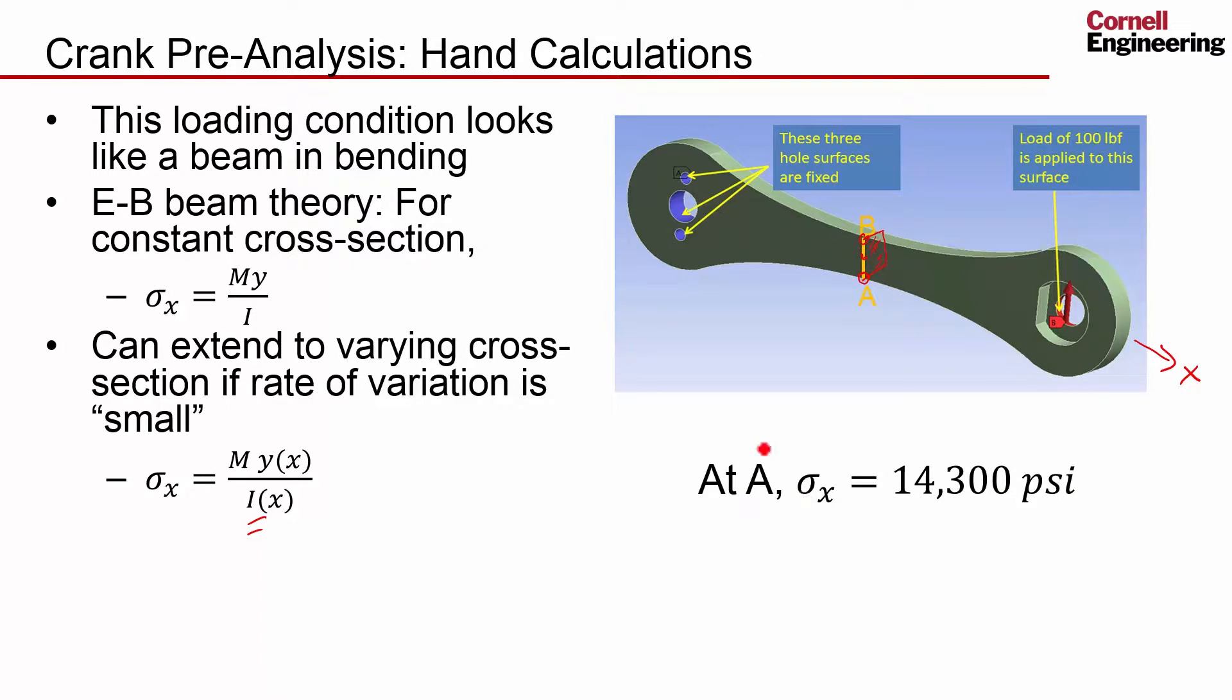And if you do that, at A, you'll get sigma X is equal to 14,300 PSI. And that's tensile because the beam is being bent this way. That makes sense. And at B, it's going to be the same value, but it's going to be compressive. So at A and B, Y, the magnitude of Y is the same. The sign is opposite. That's something we can check our ANSYS results with.